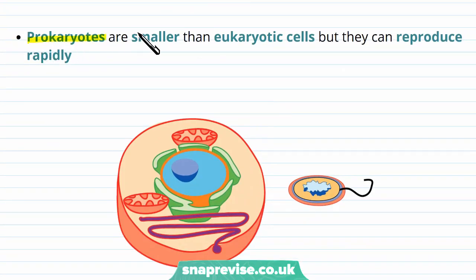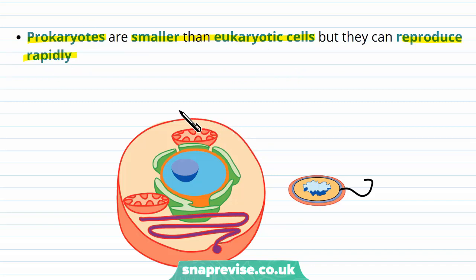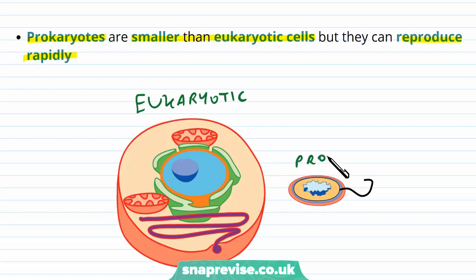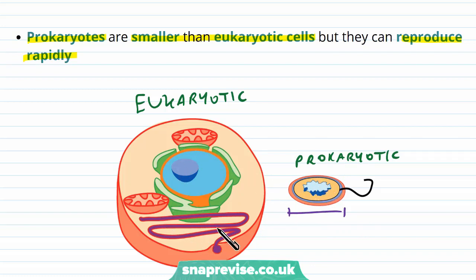The prokaryotic cells are smaller than eukaryotic cells — eukaryotic cells include animal and plant cells — but they can reproduce very rapidly. This would represent a eukaryotic cell, and this would represent a prokaryotic cell. You'll notice it's considerably smaller than the eukaryotic cell, and it's missing particular organelles and components of the eukaryotic cell, but they reproduce much more quickly.